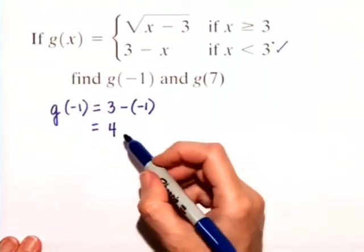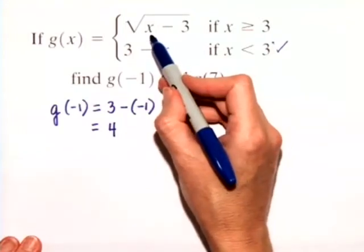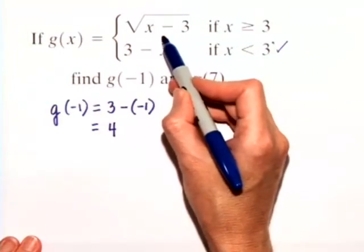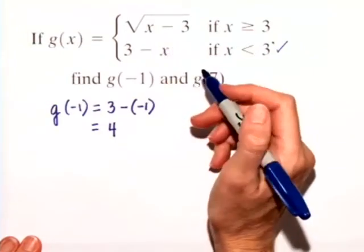Be careful not to substitute it up into the other function. If you substituted it up here, you'd get a negative value underneath your square root sign, which is not a real number.